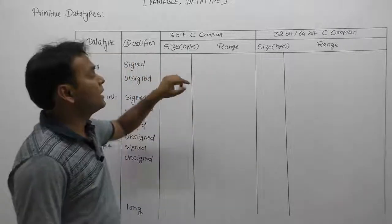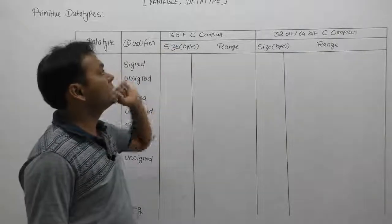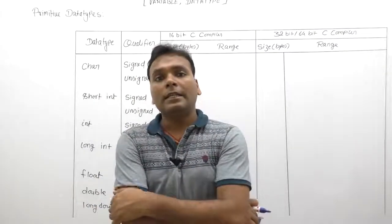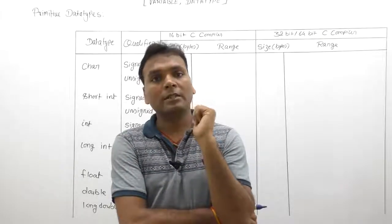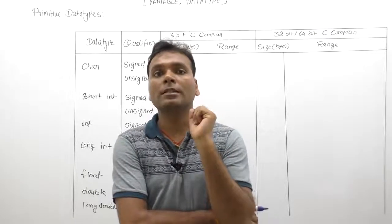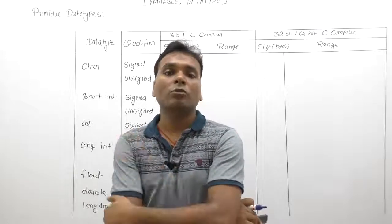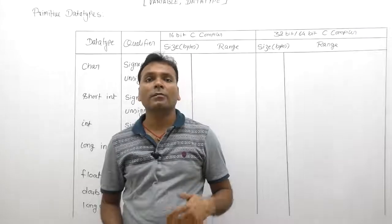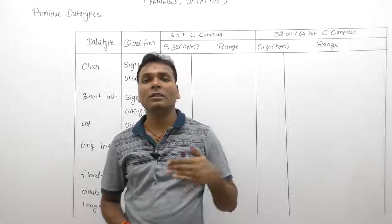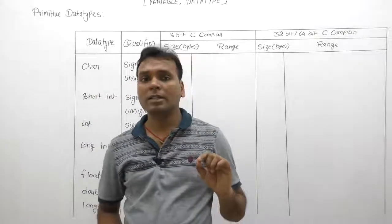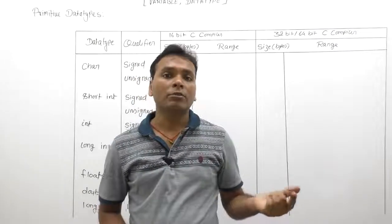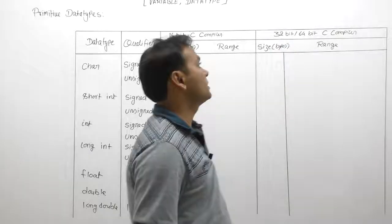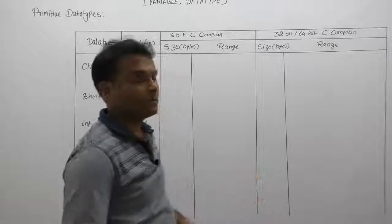Here we are writing size and range properties with respect to both a 16-bit C compiler and a 32-bit C compiler, because in the case of different compilers, integer size is dependent on the compiler. In a 16-bit compiler, integer size is always fixed at 2 bytes, but in a 32-bit or 64-bit compiler, the size of integer is 4 bytes. However, for remaining data types — character, float, double — the size is compiler independent.